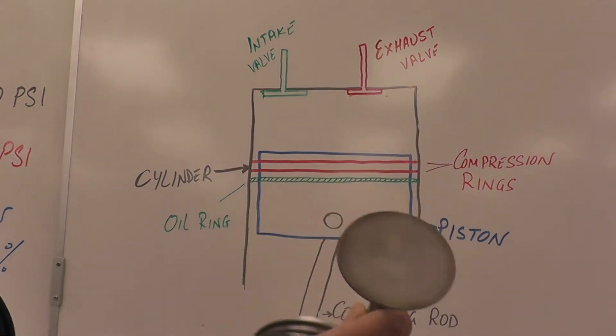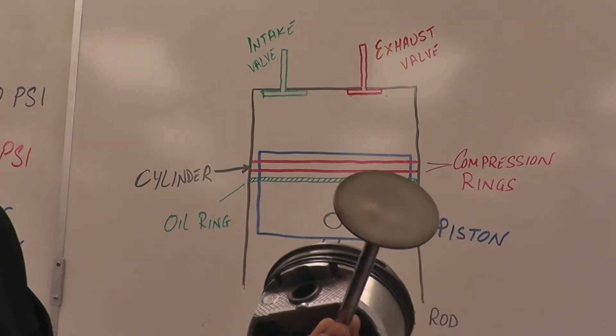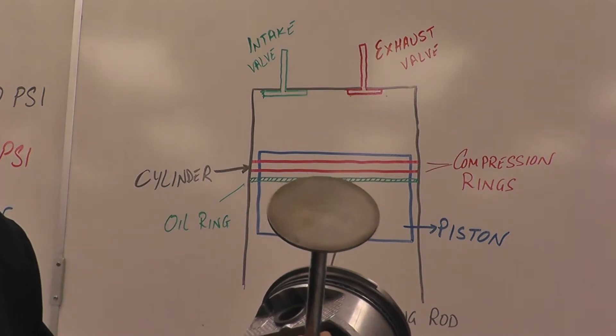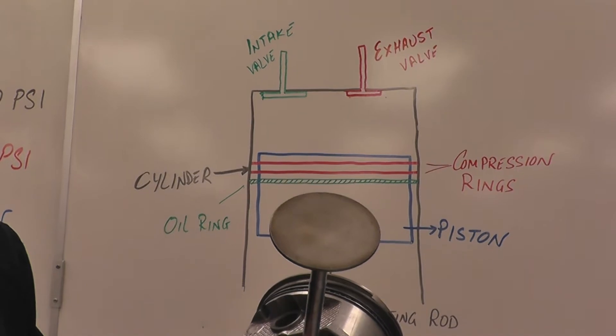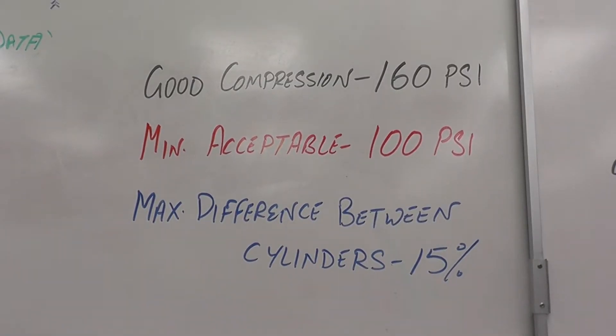When we talk about valves, they are different sizes. The intake valve is bigger than the exhaust for volumetric efficiency. On average, good compression for a good engine should be about 160 psi, pounds per square inch. Anything less than about 100 psi is not acceptable. The cylinder that has less than 100 psi doesn't really fire.